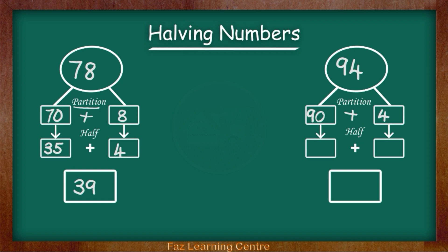Now I am going to half the number 90. Half of 90 is 45. Half of 4 is 2. 45 add 2 equals 47. So we have found out half of 94 equals 47. This is a very easy method to find out your halves of double digit numbers.